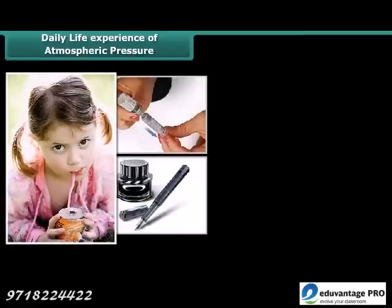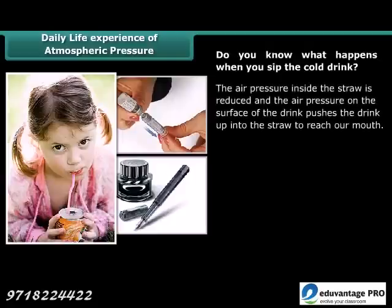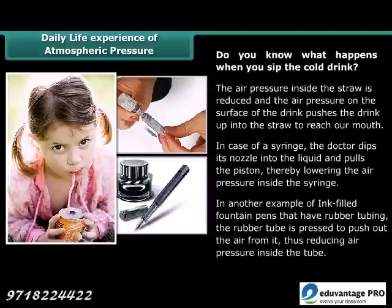In our day-to-day activities we experience various instances of atmospheric pressure. Common examples include sipping a cold drink through a straw and filling a syringe with liquid. When you sip a cold drink, the air pressure inside the straw is reduced and the air pressure on the surface of the drink pushes the drink up into the straw to reach our mouth. In a syringe, the doctor dips its nozzle into the liquid and pulls the piston, thereby lowering the air pressure inside the syringe. For ink-filled fountain pens with rubber tubing, the rubber tube is pressed to push out air, reducing air pressure inside the tube.